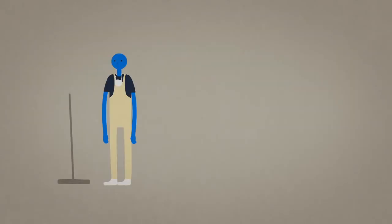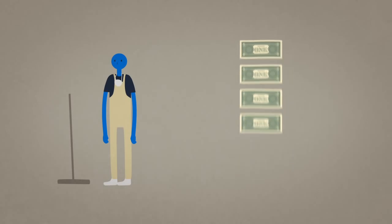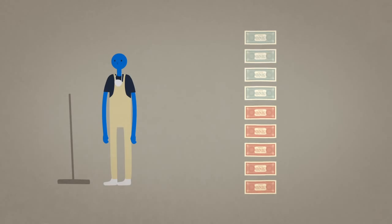But the new law is bad news for Simon. Simon's labour generates only $4 an hour for Edgar. The $9 minimum wage is $5 more than that. Edgar would be losing $5 an hour by keeping Simon on at the new legal minimum. So Simon doesn't get a raise. Instead, he loses his job.